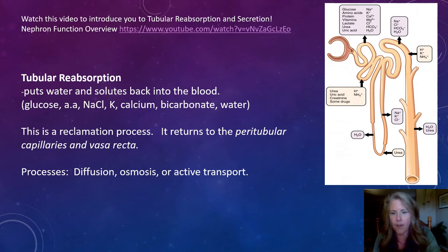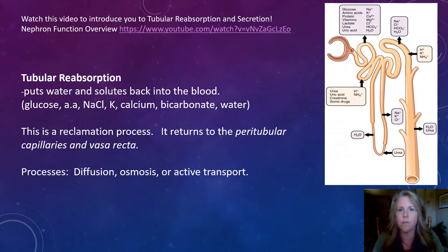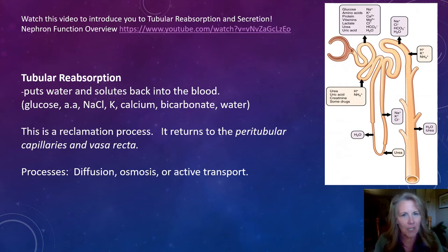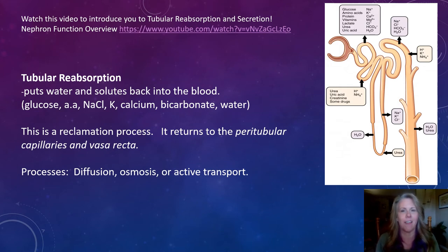Movement of substances during reabsorption occurs by a combination of mechanisms depending on the substance: diffusion, osmosis, or active transport. Diffusion is passive and relies on a concentration gradient. Osmosis is the movement of water. Active transport requires ATP — added energy — and allows movement against the concentration gradient, across the membranes, getting compounds back into the blood.